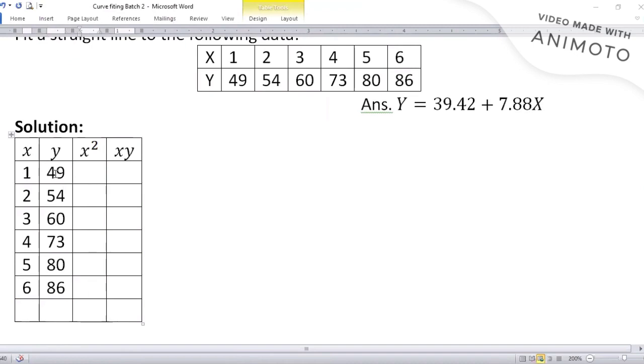X square is x data squared: 1, 4, 9, 16, 25, and 36. And x into y is their multiplication: 1×49 is 49, 2×54 is 108, 3×60 is 180, and 4×73 I think 292, and 5×80 is 400, and 6×86 is 516.